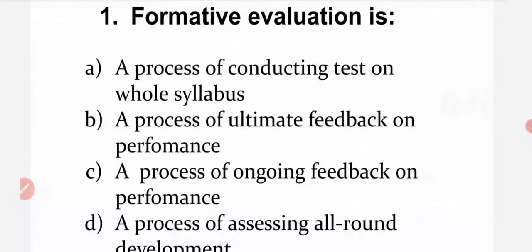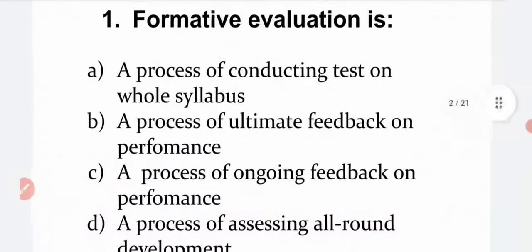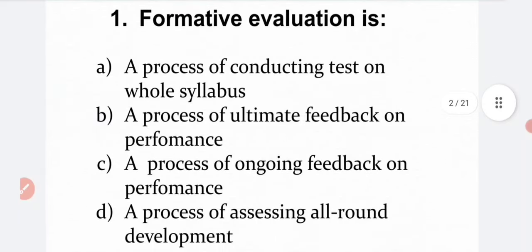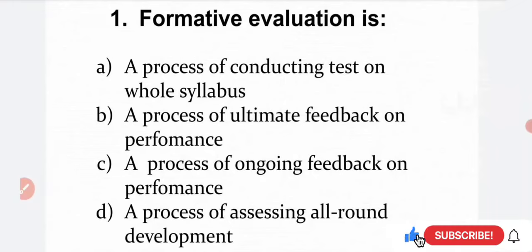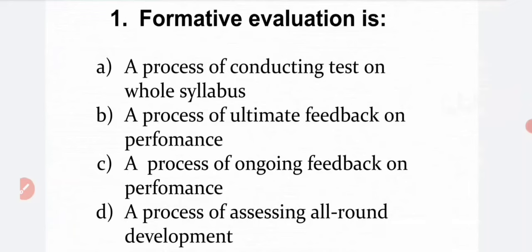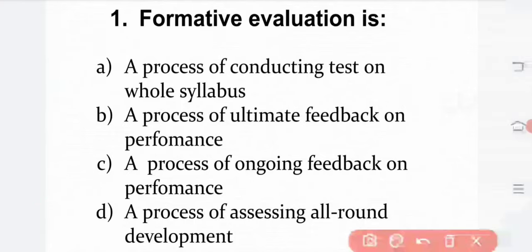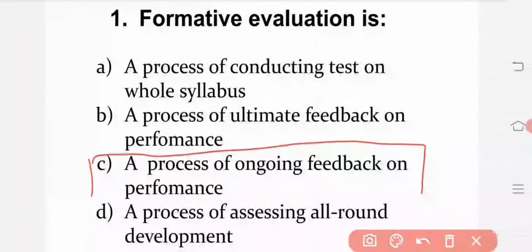First bit. Formative evaluation is: Option A — a process of conducting tests on the whole syllabus. Option B — a process of ultimate feedback on performance. Option C — a process of ongoing feedback on performance. Option D — a process of assessing all-round development. The correct answer is Option C: a process of ongoing feedback on performance.